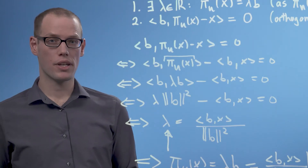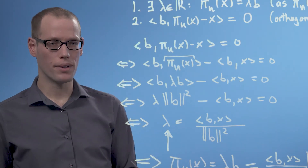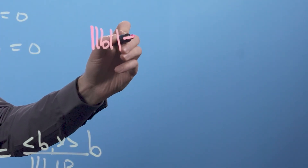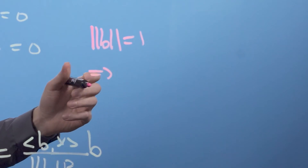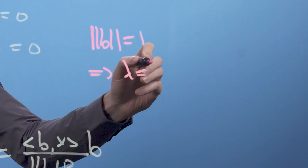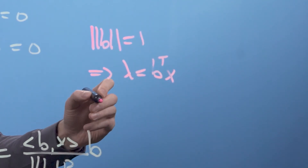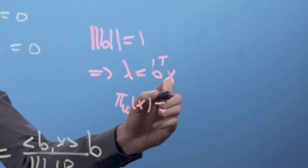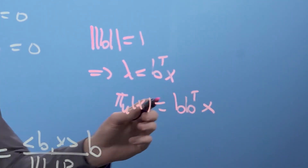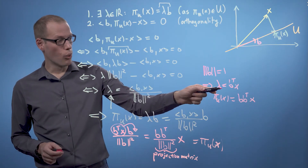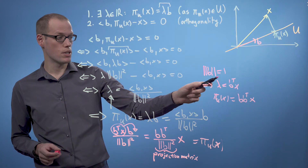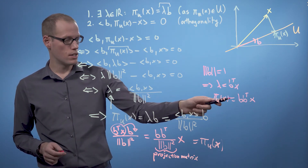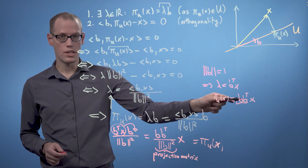Looking at the special case where b has norm 1, we get a much simpler result. If the norm of b equals 1, then lambda equals b^T times x, and pi_u of x equals b b^T times x. So the coordinate of the projected point with respect to the basis b is simply the dot product of b with x, and the projection matrix is given by b times b^T.